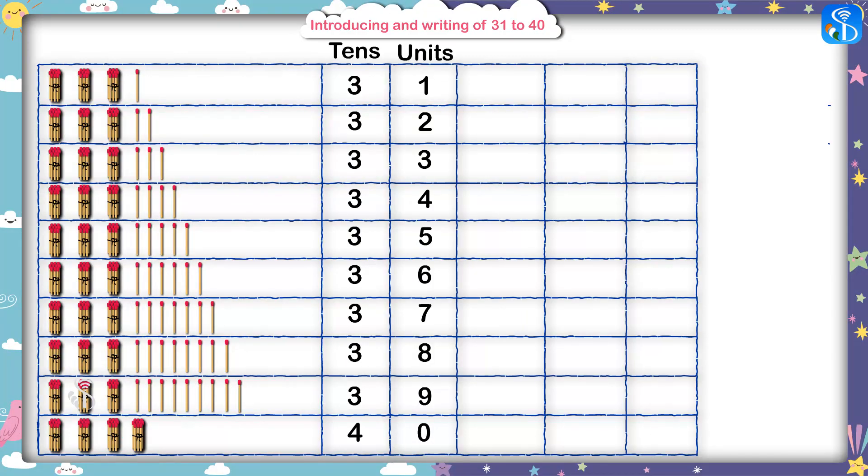Children, look at this chart. I will read it for you. Three tens, one unit, thirty-one is thirty-one. Three tens, two units, thirty-two is thirty-two.